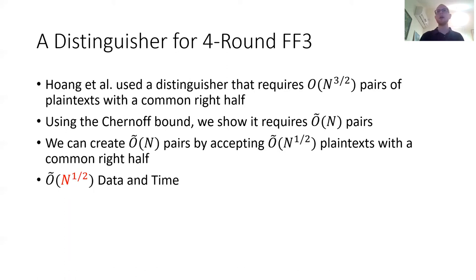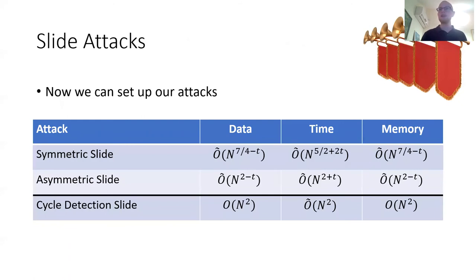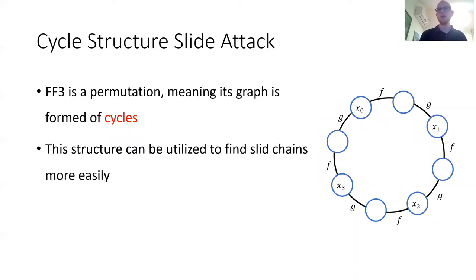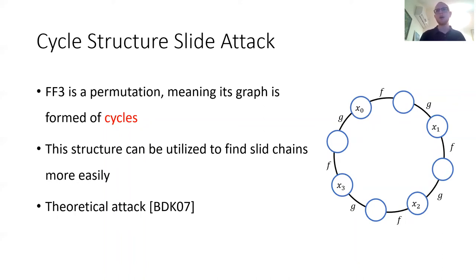So, using this distinguisher and the slid chains, we can now set up our attacks. All three of our attacks use similar premises of creating chains and trying to find slides between them. However, we only have time to present one of those attacks. We've chosen to present the cycle detection slide — the third attack — because we believe it is the most interesting. How does the cycle structure attack work? FF3 is a permutation, meaning that its graph is formed of cycles. This structure can be used to find the slid chains more easily. This is a theoretical attack presented by BM Dunkelmann and Keller in 2007. However, as stated in the beginning of the presentation, before now this attack was purely theoretical, since it requires walking over most of the domain of any certain cipher — therefore it was impractical for any cipher with a large domain. Due to format-preserving encryption having low domains, this attack is now practical for FF3, which gives it additional academic value.